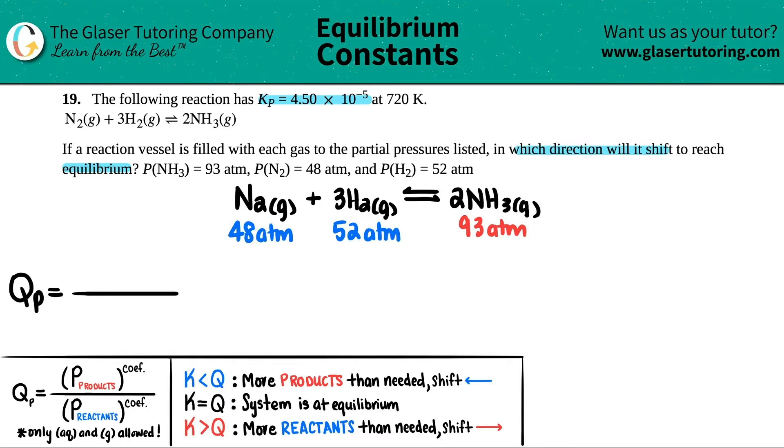So first let's write the exact expression for this balanced equation, and then we'll just plug in the numbers. But remember, only aqueous and gases are allowed. So first always check the states, but it looks like we're good here because I got gas, gas, and gas. So all three of these components are going to be in my QP formula. So let's start with the products. I just have one product. So it'd be the pressure of NH3.